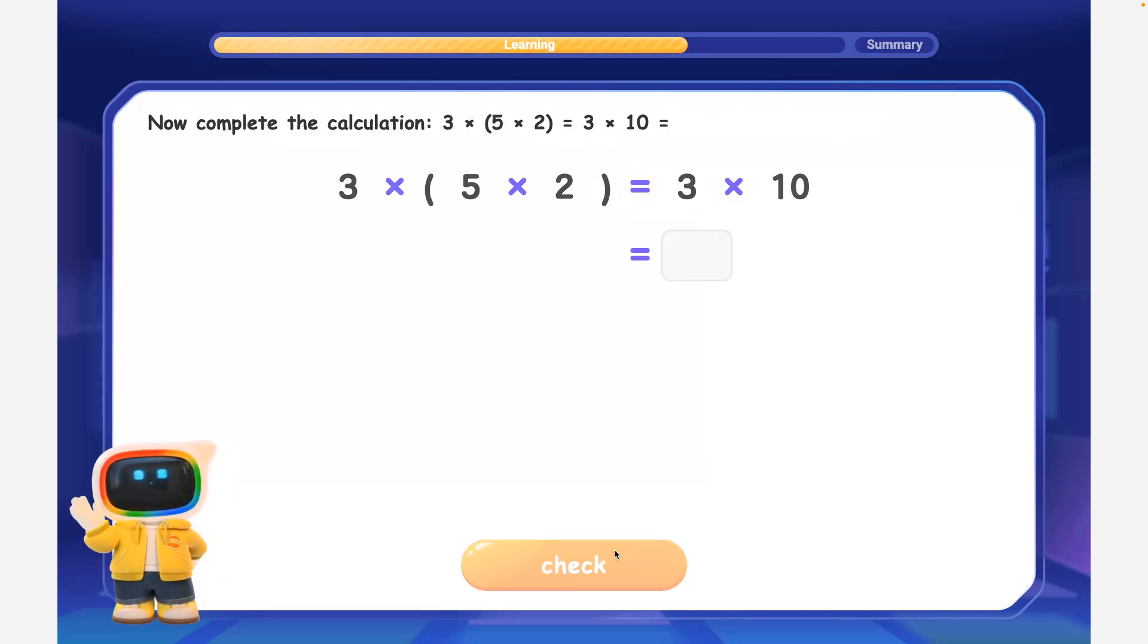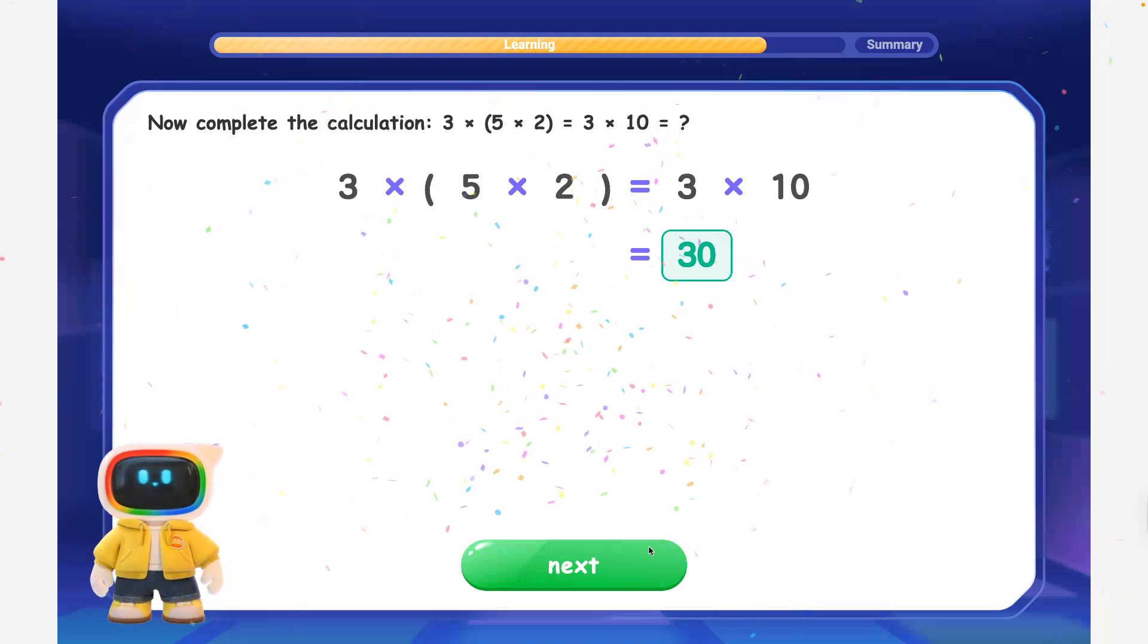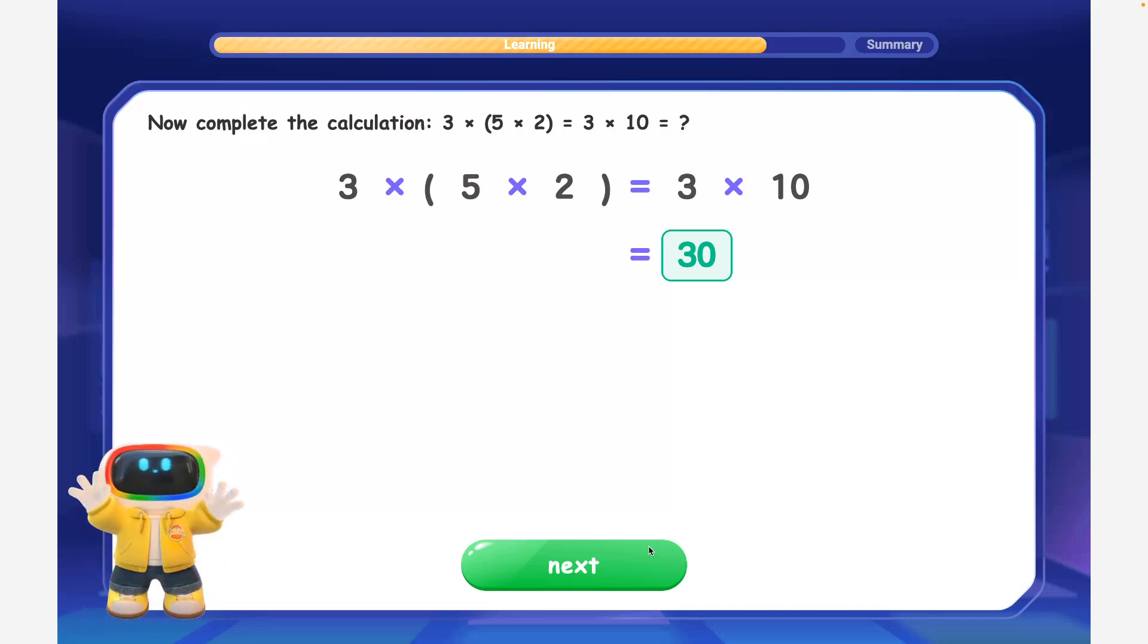Now complete the calculation. 3 times, 5 times 2, equals 3 times 10 equals? Perfect! 3 times 10 is equal to 30, so 3 times 5 times 2 is equal to 30. Grouping 5 times 2 first created a friendly number, 10, making the calculation easier.